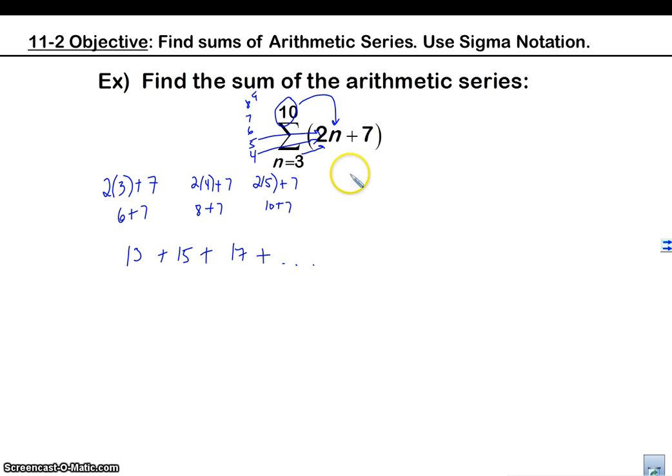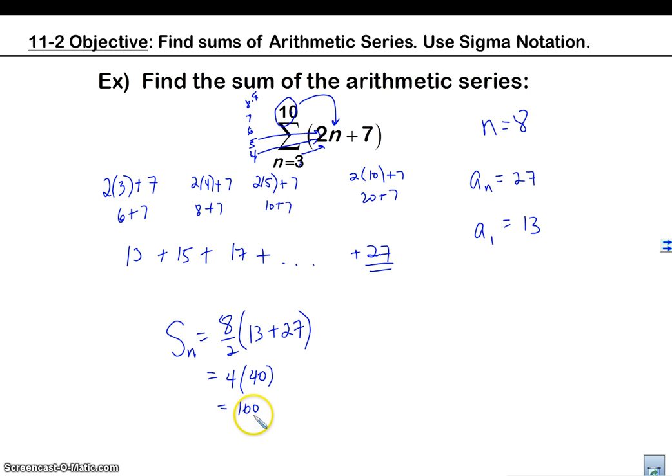So let's plug in our last one, 10. 2 times 10 plus 7 is 20 plus 7, which is 27. So our last term is 27. How many terms do we have? We have 3 to 10. Right. 1, 2, 3, 4, 5, 6, 7, 8. I have 8 terms. So I plugged in 3, 1, 2, 3, 4, 5, 6, 7, 8 terms. All right, so n is 8. a_n is 27. a_1 is 13. Let's use our formula. 8 over 2 times 13 plus 27, which is 4, 4 times 40, which is 160. All right. So there's our answer, and that's how we do them with arithmetic series, all right, with sigma notation.